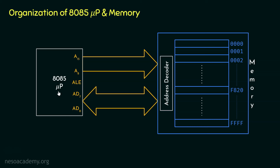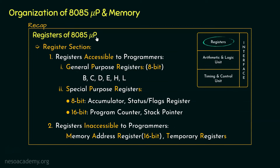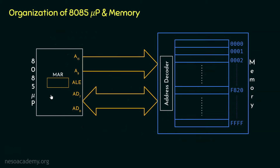For loading the address, the microprocessor will make use of a component it already has. When we were learning about the registers of the 8085 microprocessor, we came across registers inaccessible to programmers. From that list, the Memory Address Register (MAR), which is also a 16-bit register, is going to help us. So let's place the MAR within the 8085 microprocessor — say the microprocessor wants to communicate with memory location F820, so the address F820 will be loaded in the MAR first.